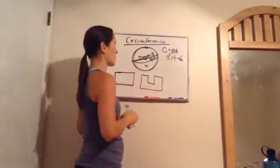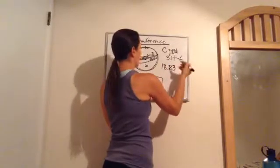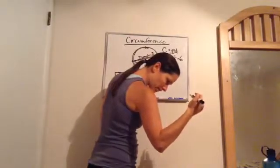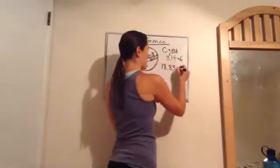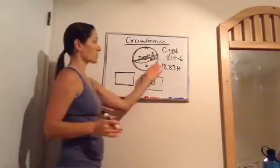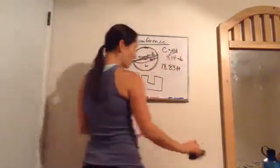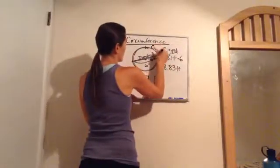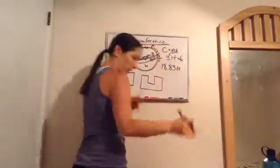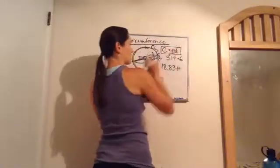3.14 times 6 gives us approximately 18.83. So the circumference is 18.83 feet. You may want to write the word 'circumference' all the way around your circle to show that it's the distance around. Also, you'll need to memorize these formulas — they come up on the ACT and SAT.